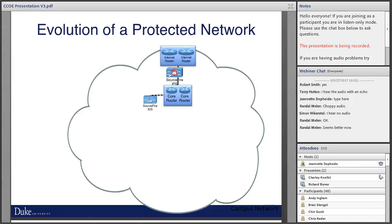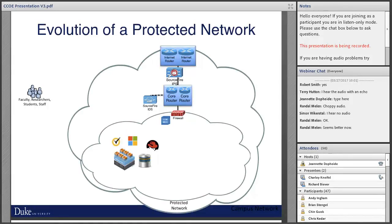That's when we got together - a core group of people scattered around campus as well as central IT - and started looking at how we could build a protected network or protected enclave within the Duke environment. Our core network has an internet edge router, runs through an intrusion prevention system, and all routing happens on the core. With the protected network, we created a segmented network or VRF, running through a firewall, with logically segmented virtual storage and virtual servers.